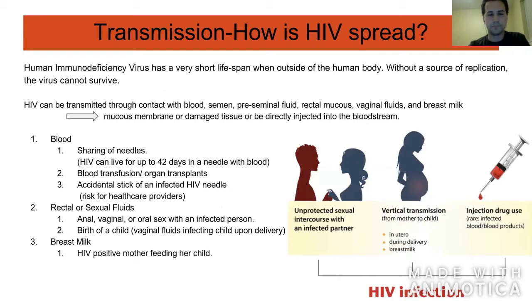How is HIV spread? Since HIV has a very short lifespan outside of the human body — without human cells, the virus can't survive — HIV is transmitted through contact with blood, semen, pre-seminal fluid, rectal mucus, vaginal fluids, and breast milk. If any of those come in contact with a mucous membrane or damaged tissue, or if it's directly injected into the bloodstream, that person can become infected.